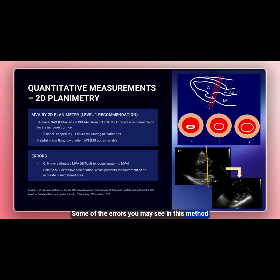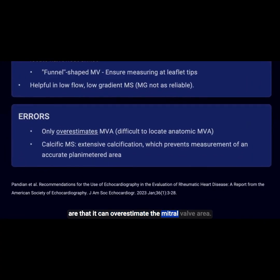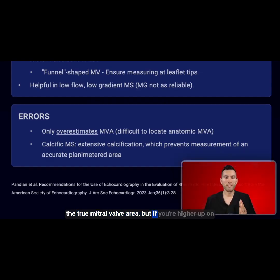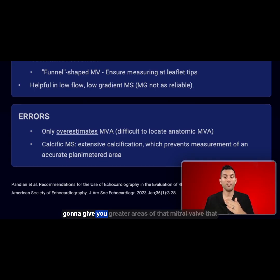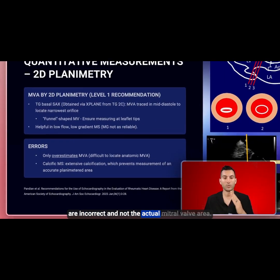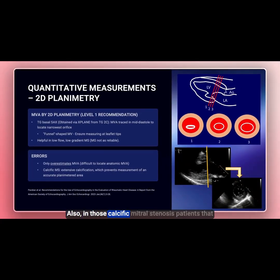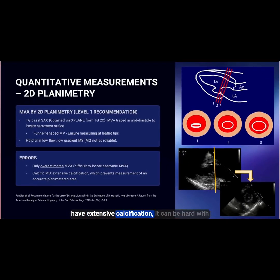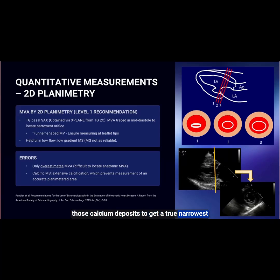Some of the errors you may see with this method are that it can overestimate the mitral valve area. If you locate the narrowest orifice, that gives you the true mitral valve area. But if you're higher up on the mitral valve or your plane is slanted, it will only give you greater areas that are incorrect and not the actual mitral valve area. Also, in those calcific mitral stenosis patients with extensive calcification, it can be hard to get a true narrowest orifice area and planimeter that area correctly.